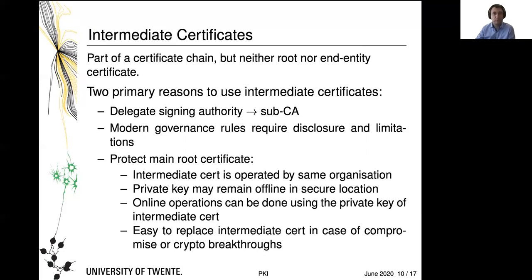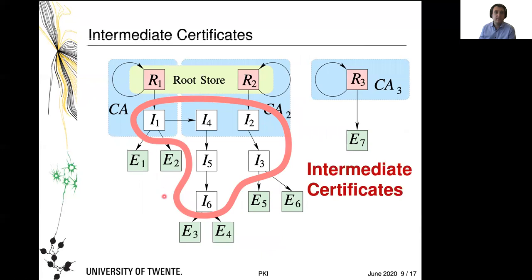For example, you could implement an intermediate as a sub-CA that is not in the root store but acts as a subordinate CA of the CA that holds the root certificate R1. Also note that a CA can operate both a root certificate and an intermediate certificate. Modern governance rules require you to disclose sub-CAs and add certain limitations before your CA can be added to the root store, though this was not the case until roughly 2012.